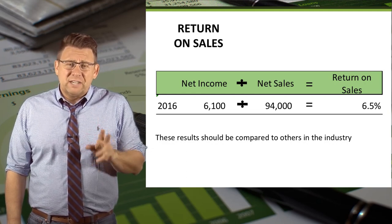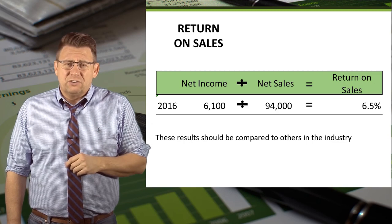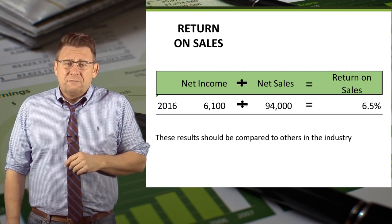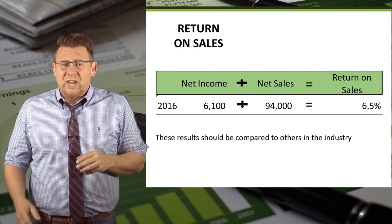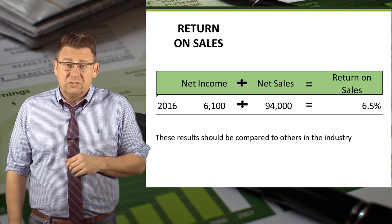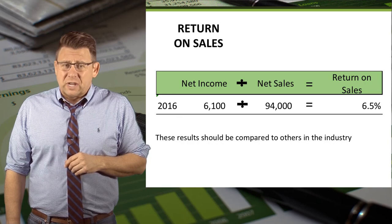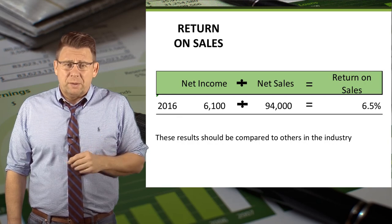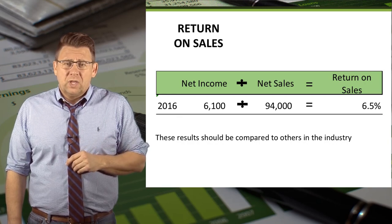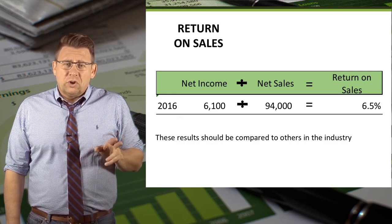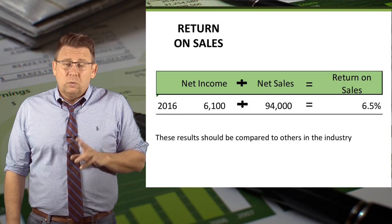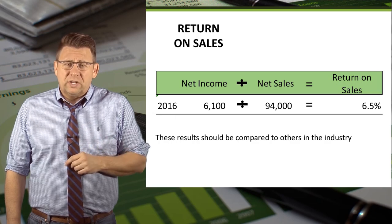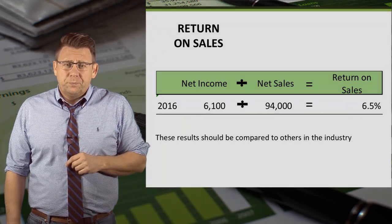The result of this ratio varies significantly by industry. Pharmaceutical companies will have much higher return on sales than food processors, for example. This result is much more comparable within its own industry.